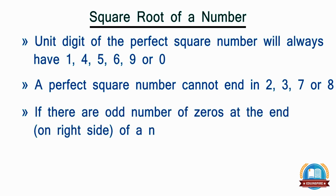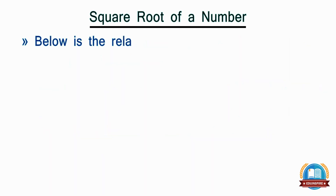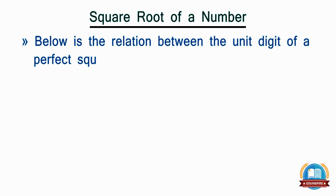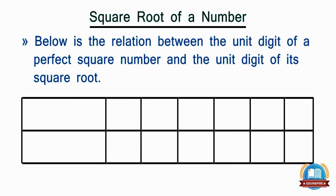If there are an odd number of zeros at the end or right side of a number, then it will not be a perfect square. Below is the relation between the unit digit of a perfect square number and the unit digit of its square root.